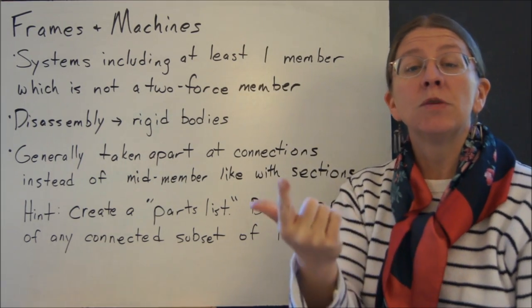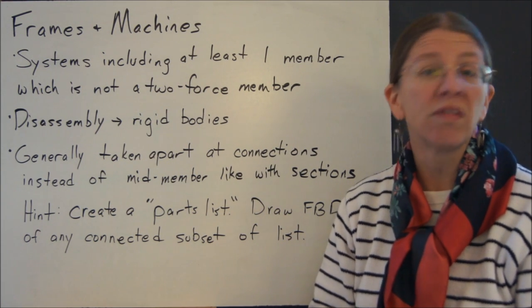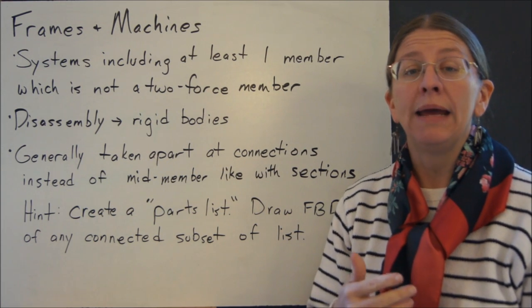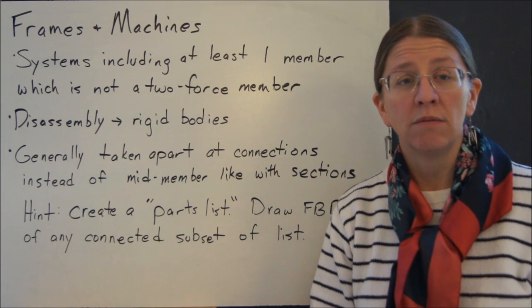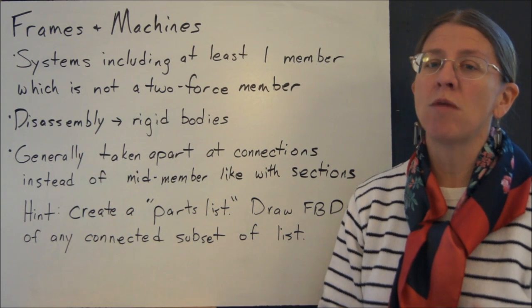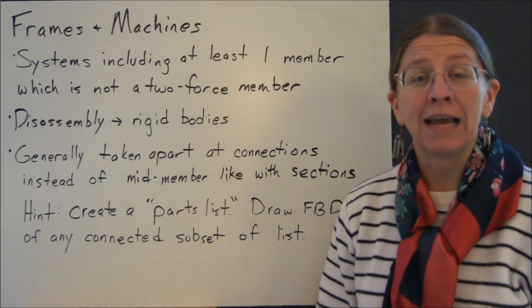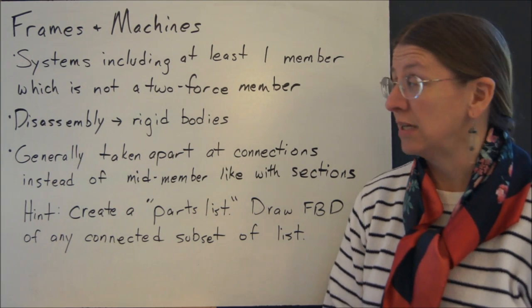The only difference between a frame and a machine is that a frame generally does not have things that would move—think bridge. A machine is something that generally would have a moving part—think backhoe—except right now we're studying statics, so it's probably not moving at the moment. The statics in analyzing a frame and a machine is the same, so it doesn't really matter what the distinction is.